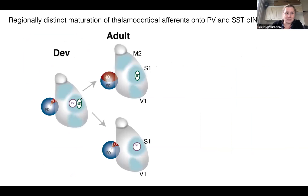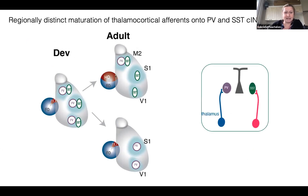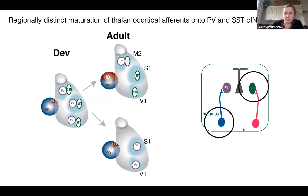To summarize: both PV and SST start with the same type of input from the thalamus, driven mostly by first order. Later, SST balances inputs between first and higher order, while PV in sensory areas maintains that ratio. However, PV in M2 receives a balance between first and higher order. This suggests SST — which looks alike in all areas — postsynaptically regulates thalamic afferents based on its identity, while PV — which differs across areas — is probably affected by presynaptic sensory activity.